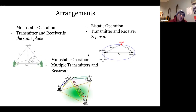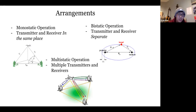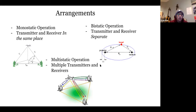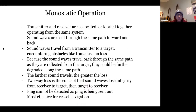We're going to go over different radiological arrangements, which are also important because these same principles are used by radar, which we'll cover in the next lesson. The three arrangements are: monostatic operation, where the transmitter and receiver are in the same place; bistatic operation, where the transmitter and receiver are separate or in two different positions; and multistatic operation, where there are multiple transmitters and receivers in different spots.